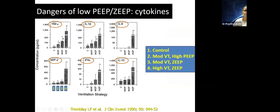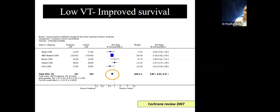This quick summary shows that TNF, interleukins, interferons — all these cytokines — are increased when high volumes are used with low PEEPs. It's very important to remember that whenever we deliver PIP or volume in volume-controlled ventilation, we have to be very careful about the volume and pressures we set, because we are also causing damage at the level of inflammatory cytokines.